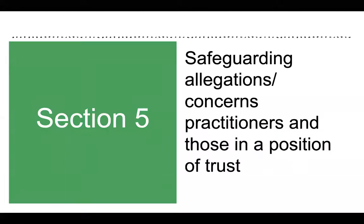This is the final video in a series providing an overview of the Wales safeguarding procedures. This video covers the process and responsibilities to be followed in relation to safeguarding allegations or concerns made about practitioners and those in a position of trust, as it relates to concerns about both children and adults who may be at risk. Section 5 details the process that should be followed when safeguarding allegations or concerns are made against practitioners and those in a position of trust.